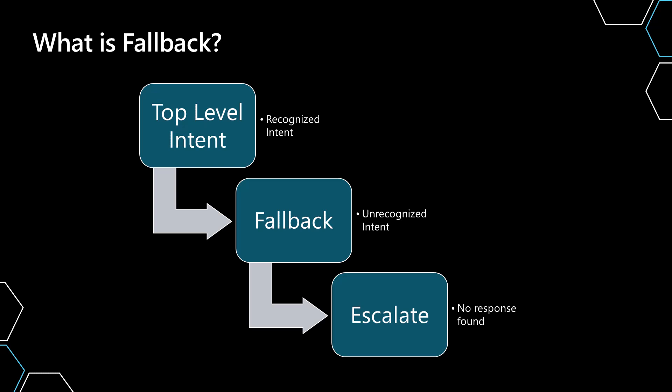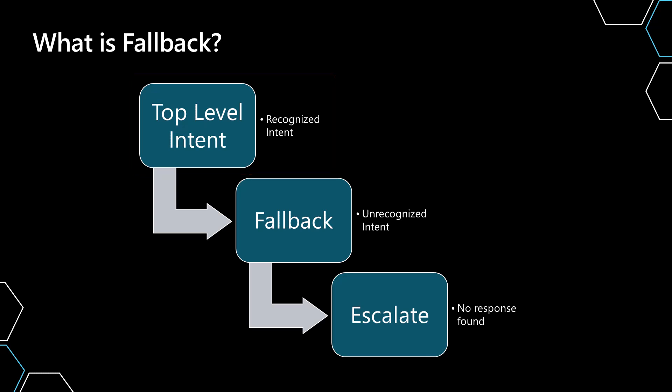If we think about what fallback is in the concept of a conversational orchestration, imagine that you have a top-level intent — these are things you program in as topics or plugin actions that you want the conversational agent or Copilot to handle. You program in an action you want it to take, like ordering a pizza, which represents the intent. When there is a situation where you don't recognize the intent, this is what we call fallback.